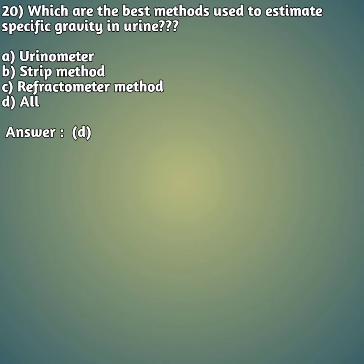Question 20: Which are the best methods used to estimate specific gravity in urine? Option A: urinometer, option B: strip method, option C: refractometer method, option D: all. The right answer is option D, all — urinometer, strip method, and refractometer method are all used to estimate specific gravity in urine.